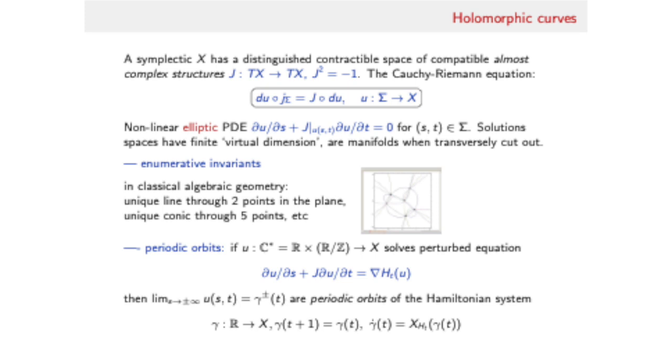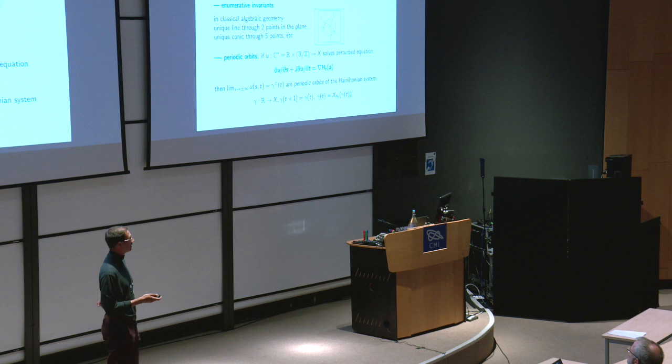This PDE shows up in all parts of the subject. Looking at our motivations, classical enumerative facts in algebraic geometry - the fact that there's a unique line in the plane through two points or a unique conic through five points - you can think of these as giving examples of computations of enumerative invariants which count solutions to this equation. In this case, studying maps of sigma equals P^1 into X equals CP^2 with appropriate constraints.